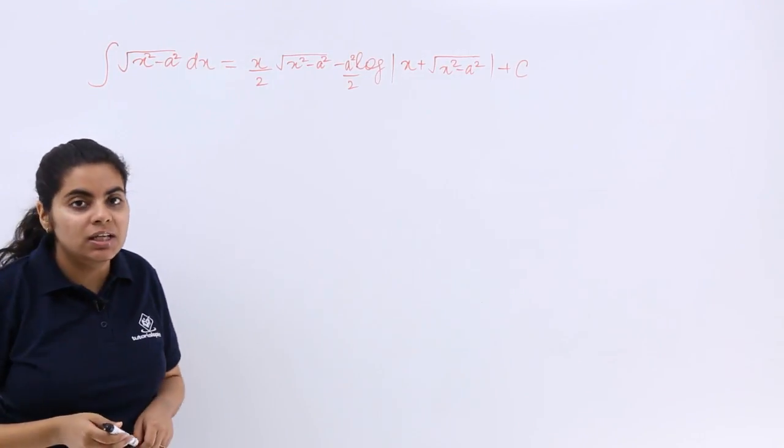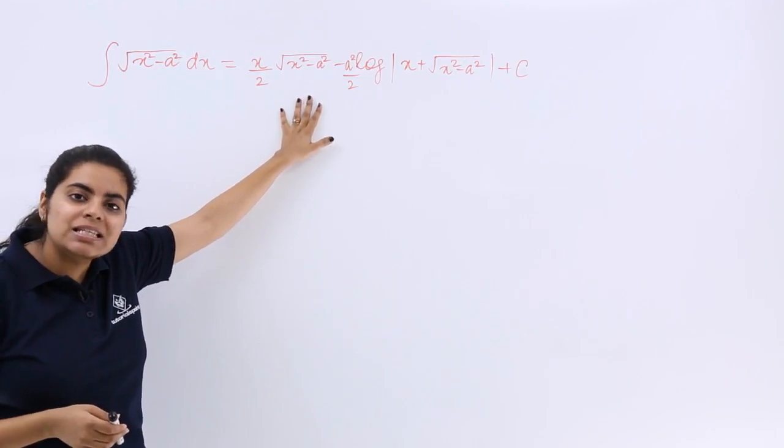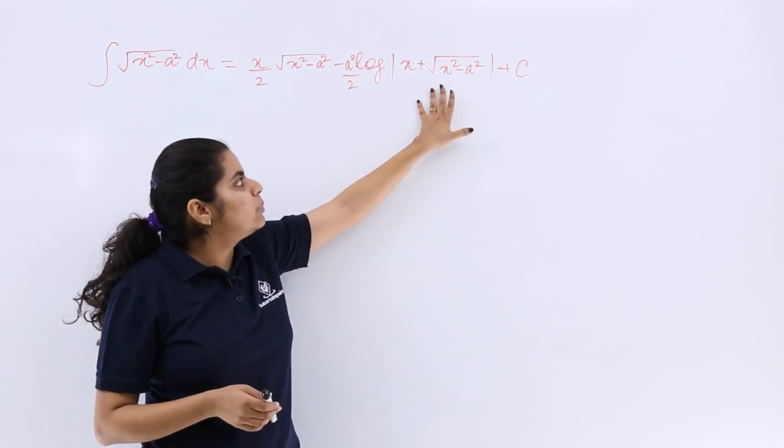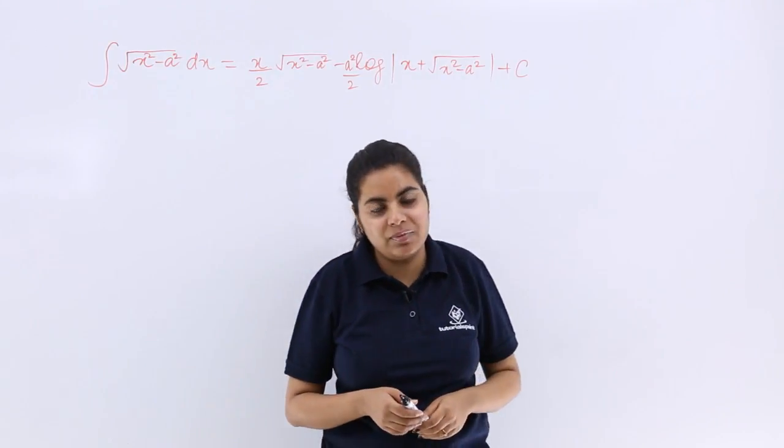So how to do this kind of question? The formula would be (x/2)√(x² - a²) - (a²/2)log(x + √(x² - a²)) + c.